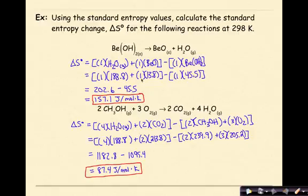I multiply and add my values for my products together to get 202.6. I do the same thing for my reactant, which is 45.5. I take the difference,